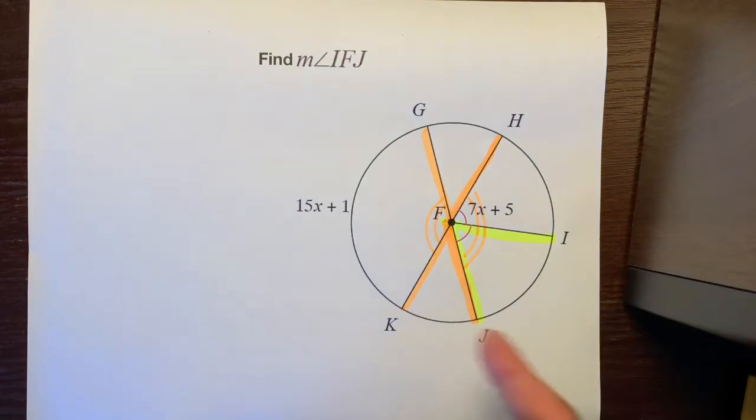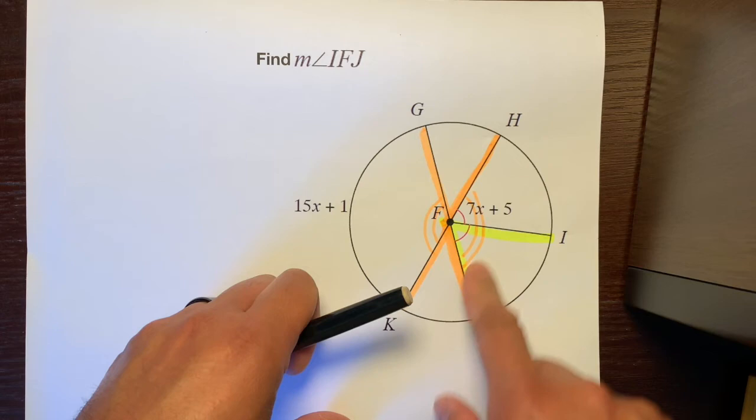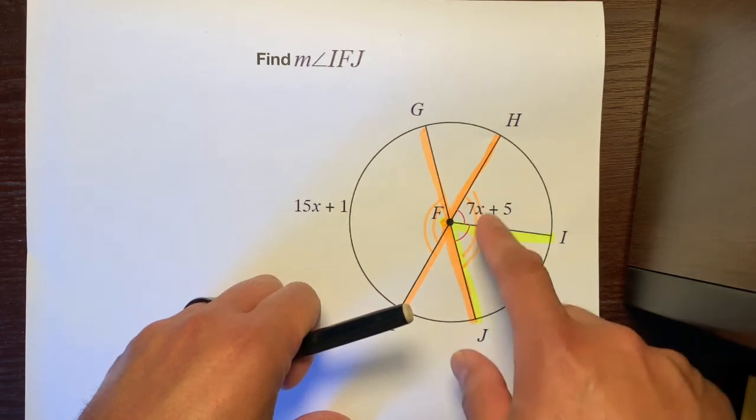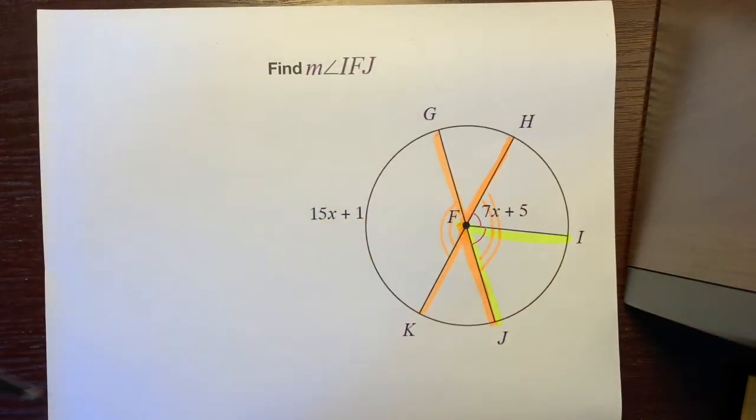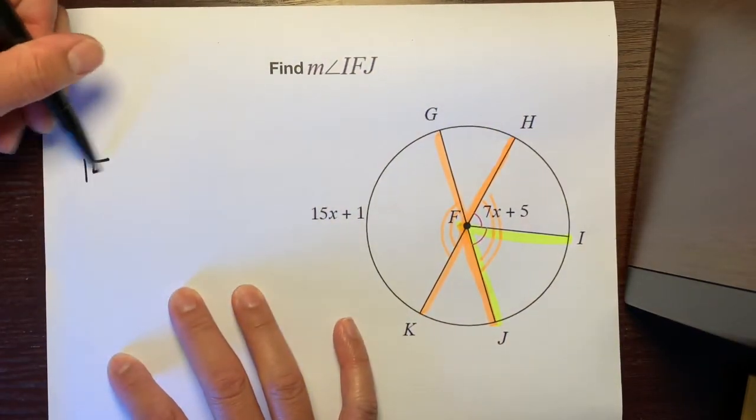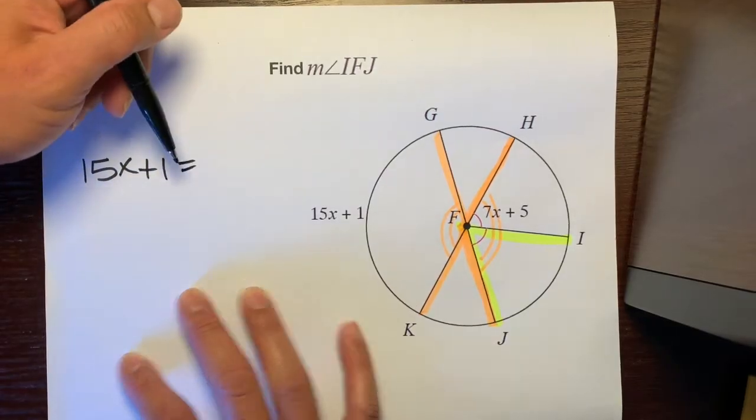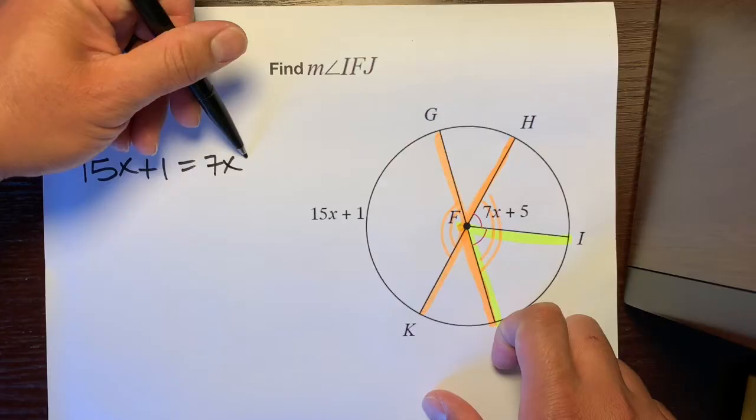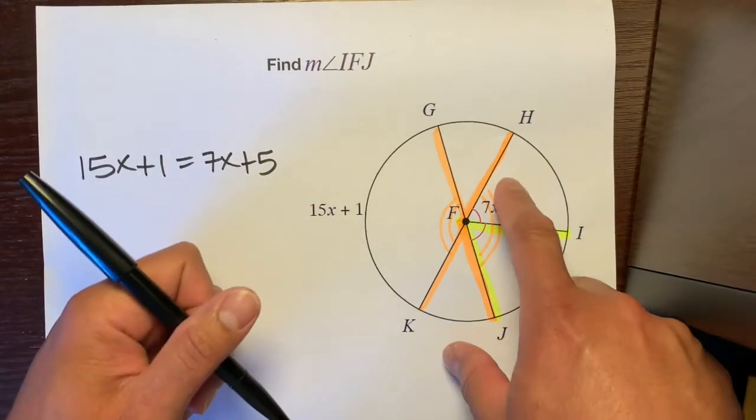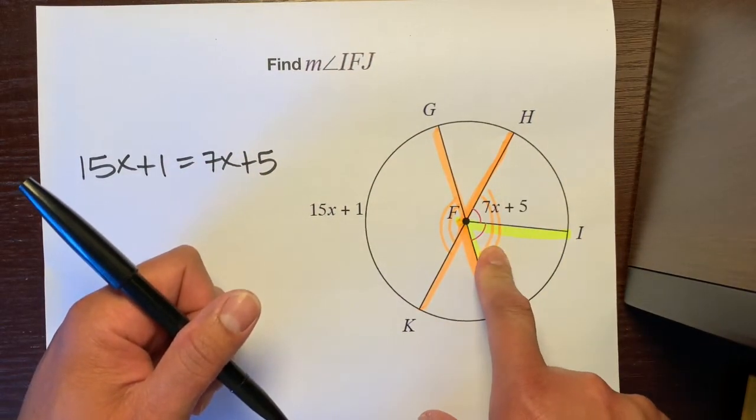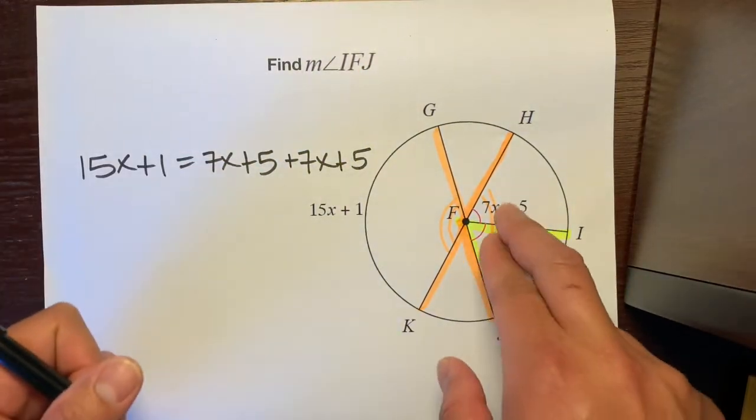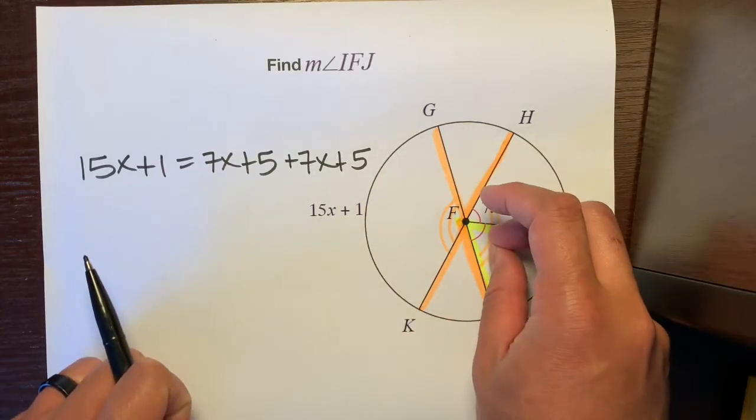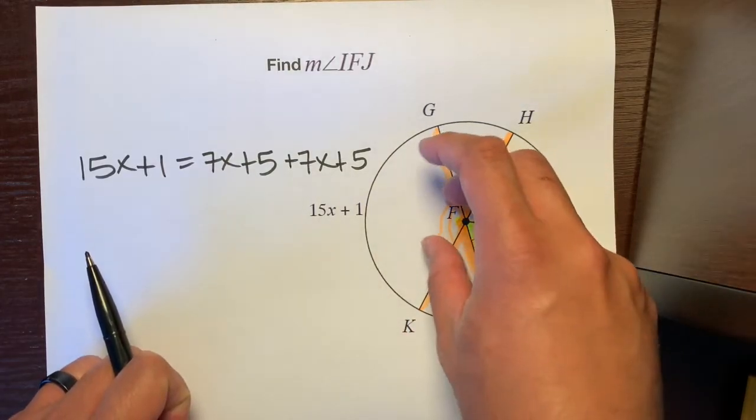Let's first start off with figuring out what x is. If these two angles put together, the sum of these two angles is congruent to this angle right here because they're vertical, we could set them equal to each other. Let's write 15x plus 1 is equal to 7x plus 5. And not just this angle, but this angle plus this angle, 7x plus 5, is equal to this. These two put together are vertical to this angle right here.